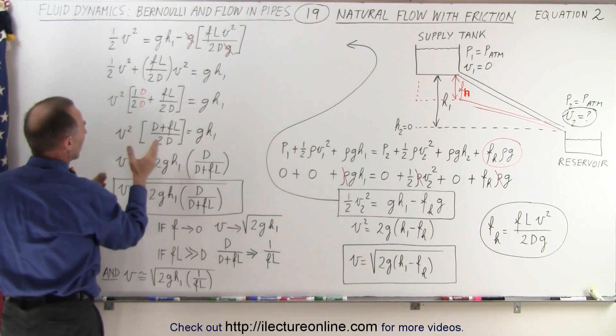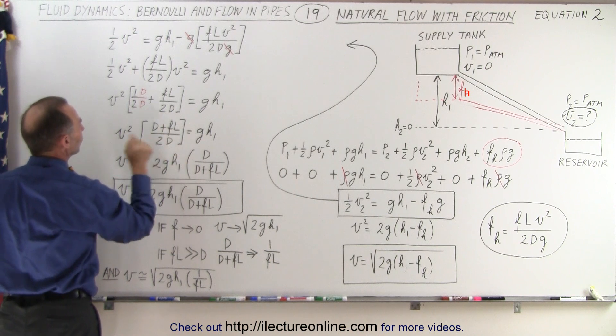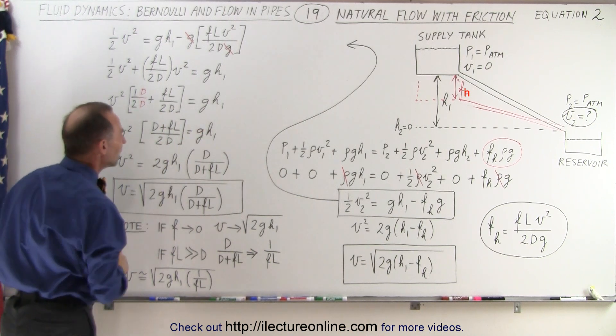So I have a common denominator. We write both of them over the same common denominator. So we get v squared equals d plus fl over 2d equals gh1.